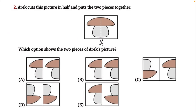Now moving to question number two: Eric cuts this picture in half and puts the two pieces together. A question picture is given and he has cut it into two pieces. He has hidden the two pieces among the options given below, and we have to check which option shows the two pieces of Eric's picture.